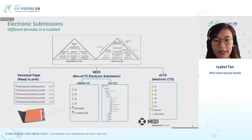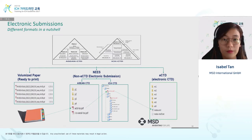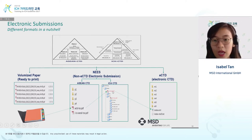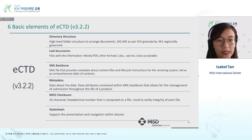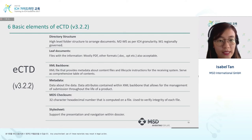The volumized paper format is mainly supported in PDF files with no navigation elements until printed. The NeST format utilizes a PDF table of contents, and eCTD utilizes XML technology for navigation and display of technical elements. There are six basic elements in the current version of eCTD: directory structure from CTD, leaf documents, XML backbone, metadata, MD5 checksum, and stylesheet, each of which will be elaborated in subsequent slides.